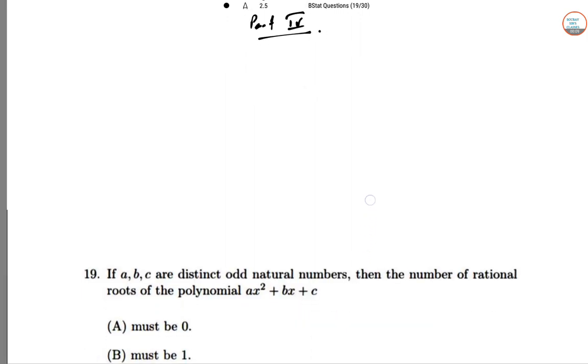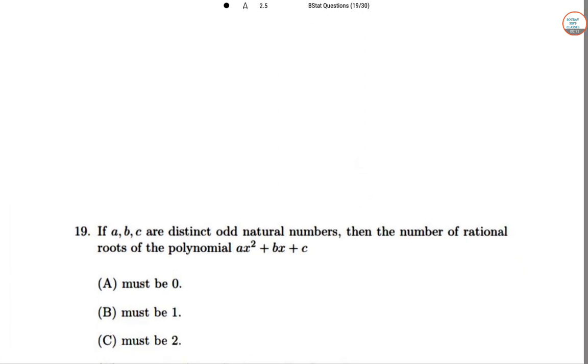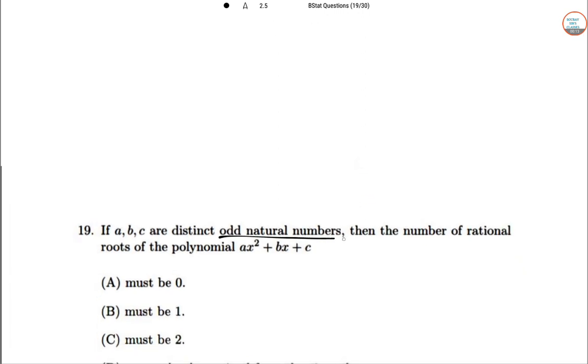Question 19: A, B, C are distinct natural numbers. Find the number of rational roots of the polynomial AX² + BX + C.